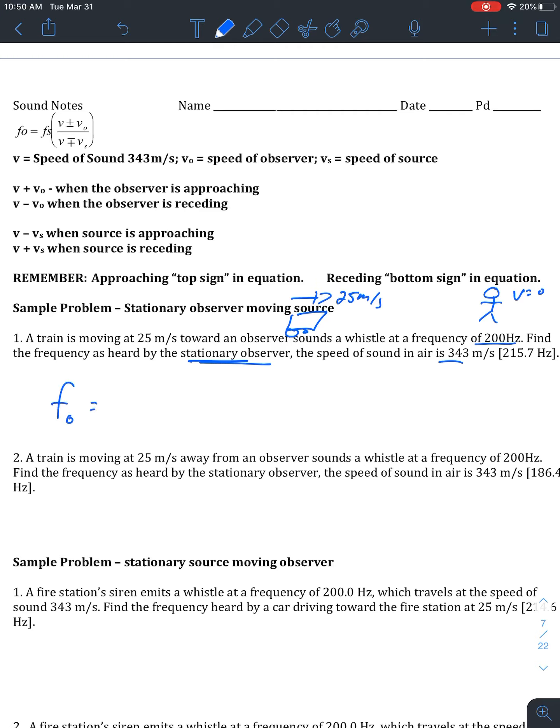So we're looking for our observed frequency. Our source frequency is 200 hertz. V is just the speed of sound in air. And since the observer is not moving, it's neither receding or approaching. So it's really just zero, plus or minus. So it really doesn't change that top value. And then in the bottom, the source is approaching. So we're going to subtract. Because that's what our rule says right here. And that was at 25 meters per second.